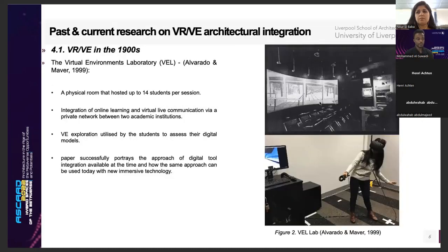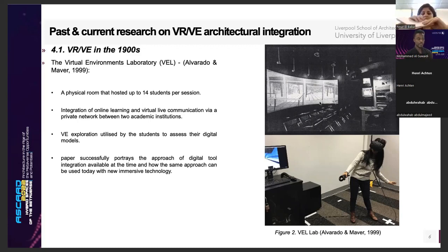After filtering these papers, we placed them in a timeline order to understand the initial approach and how these tools were used from the 1990s to the present. One of the first examples is the VEL lab, also known as the Virtual Environments Laboratory. This was one of the initial steps towards incorporating virtual environments in student cohorts and educational platforms. The VEL lab explored the use of a panoramic screen displaying a wide field of view, located in a physical room that hosted up to 14 students per session, allowing one main user to present pre-built models to students.